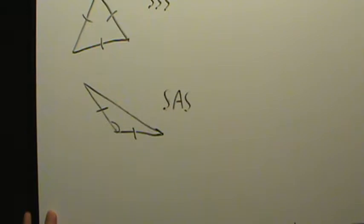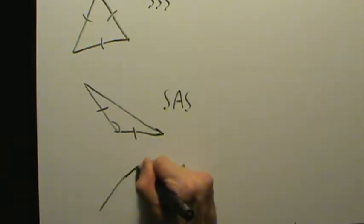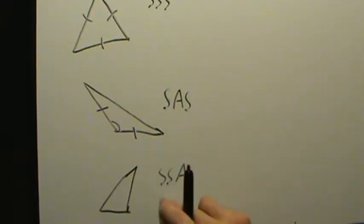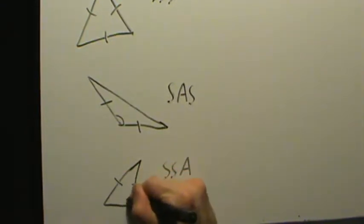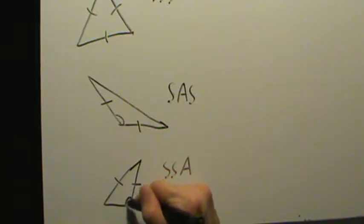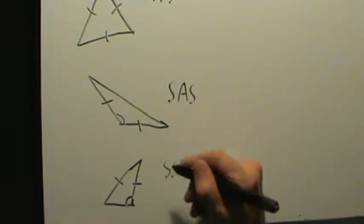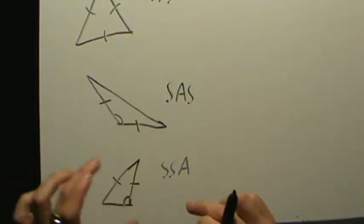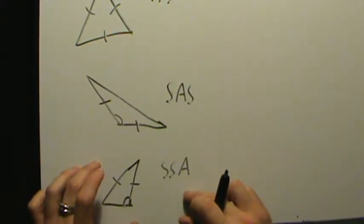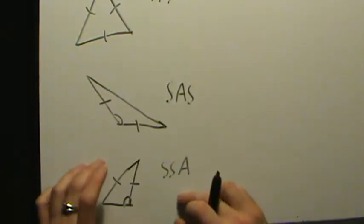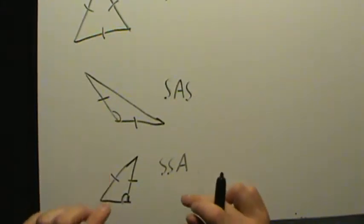Now the third case, which I don't recommend using the law of cosines for, is actually SSA. Technically speaking, you can use it. Remember, this is the troublemaker case for the law of sines because it could lead to the ambiguous case. SSA would be like here: side, side, and then an angle that's not between the two sides. You could use the law of cosines for that, but I don't recommend it because the algebra gets kind of messy. It basically boils down to solving a quadratic equation, and you still have the ambiguous case. So it's best just to stick with the law of sines for SSA.